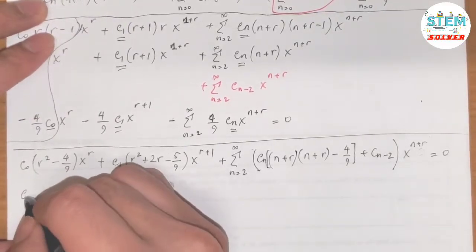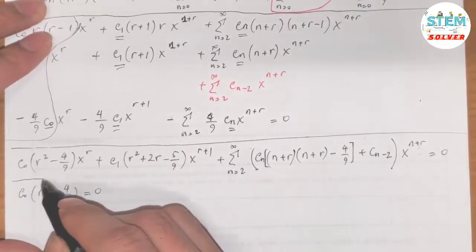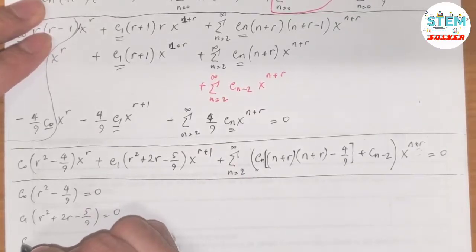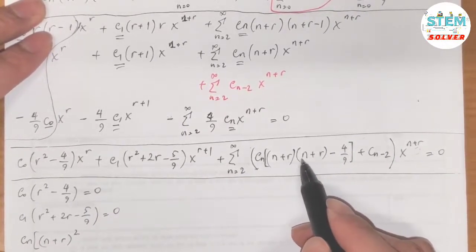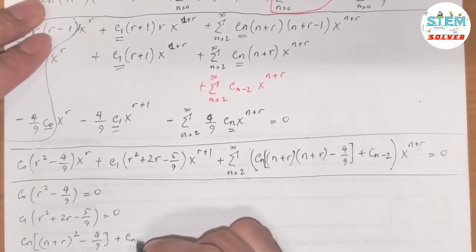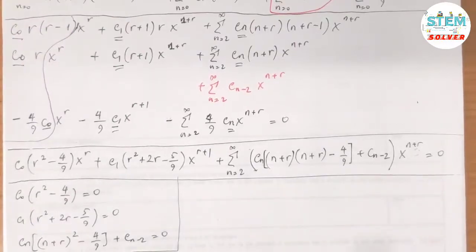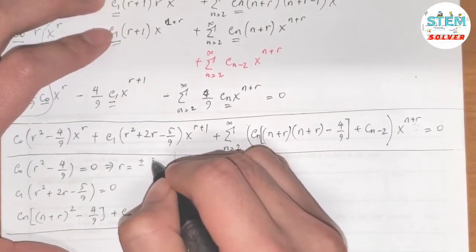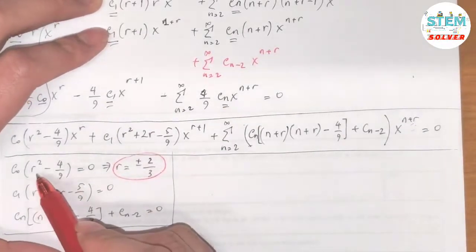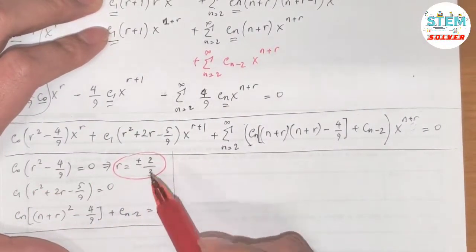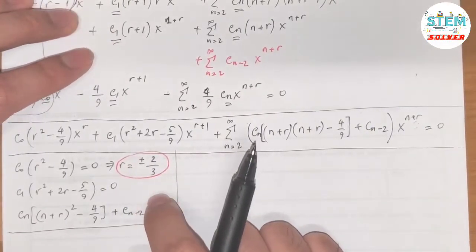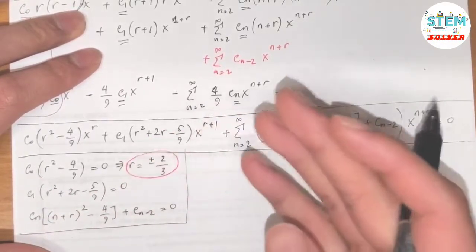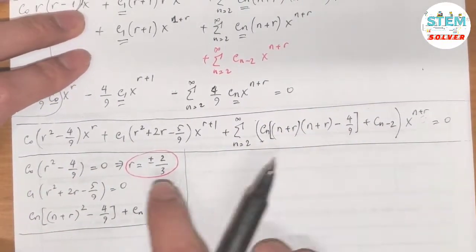Equating coefficients: from the indicial equation r² − 4/9 = 0, so r² = 4/9, giving r = ±2/3. We don't solve for c0 because that would make y equal to zero. So we solve for r to get our two cases: r = +2/3 and r = −2/3.